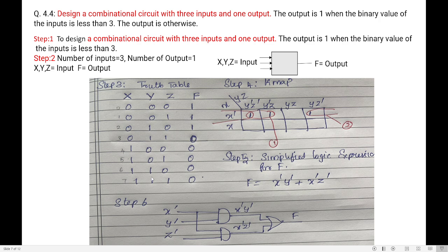The combinations go from 000 (decimal 0) through 001 (1), 010 (2), 011 (3), up to 111 (7). The condition is: output F is 1 when the binary value of the input is less than 3. So for values 0, 1, and 2, I write output 1. For value 3 (equal to 3, not less than 3), I write 0. The rest are all zeros. The truth table is now complete.